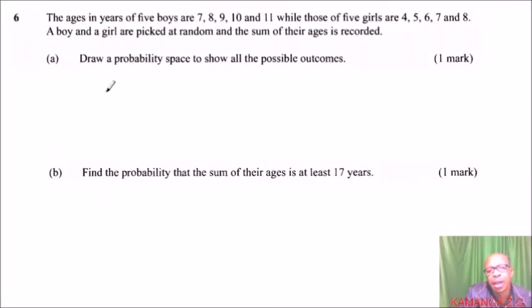Okay, question number six. The ages in years of five boys are 7, 8, 9, 10, and 11, while those of girls are 4, 5, 6, 7, and 8. A boy and a girl are picked at random, and the sum of their ages is recorded.